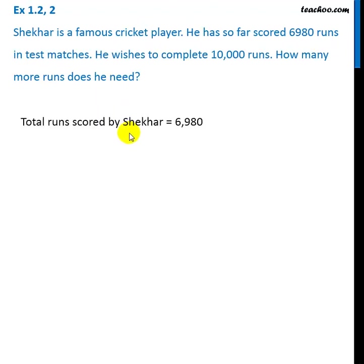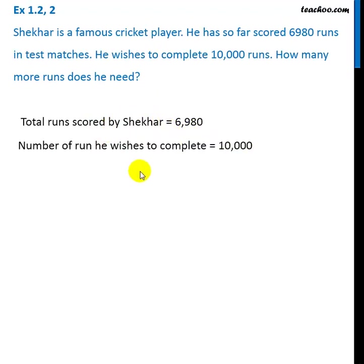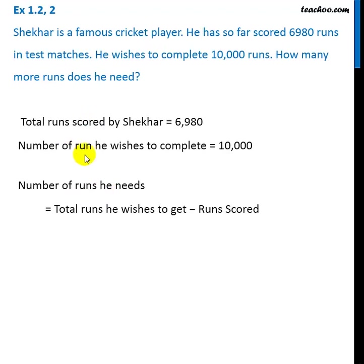Let's write it down. Total runs he has scored so far is 6,980. He wishes to complete 10,000 runs. So the number of runs he needs will be the number of runs he wishes to complete minus total runs scored, that is 10,000 minus 6,980.